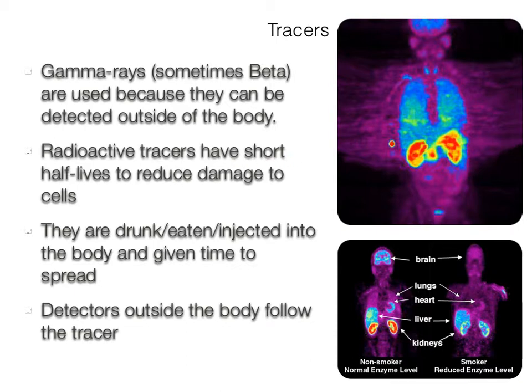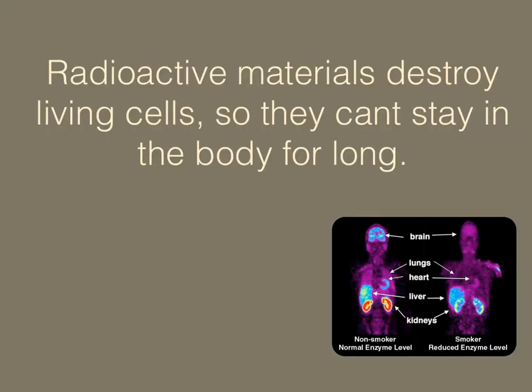Radioactive tracers only have a short half-life so that they reduce their radiation quickly and don't damage living cells. It's very important to be aware that radioactive materials destroy living cells, so they can't stay in the body for very long. In an exam question, you might be asked to select the most appropriate radioactive material to use as a tracer. You need to consider their penetrating power — for example, gamma can be detected outside the body — and also their half-life, which should be long enough to be detected but short enough not to damage living cells.